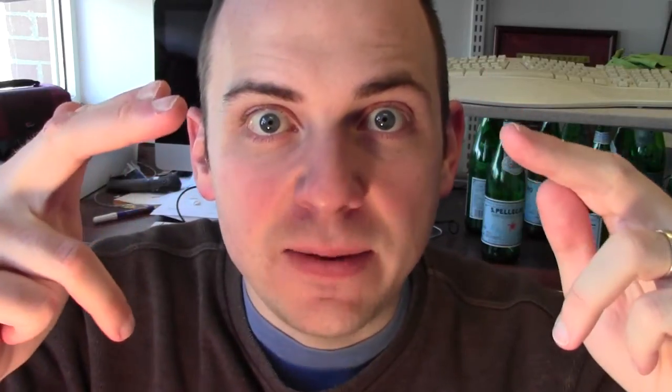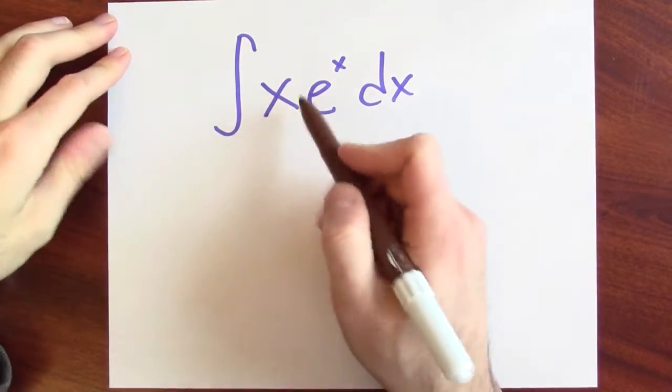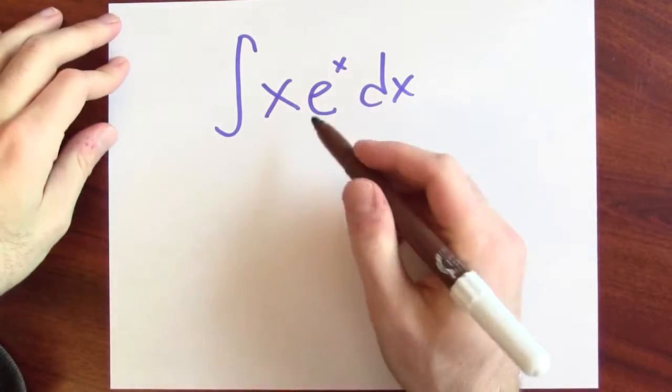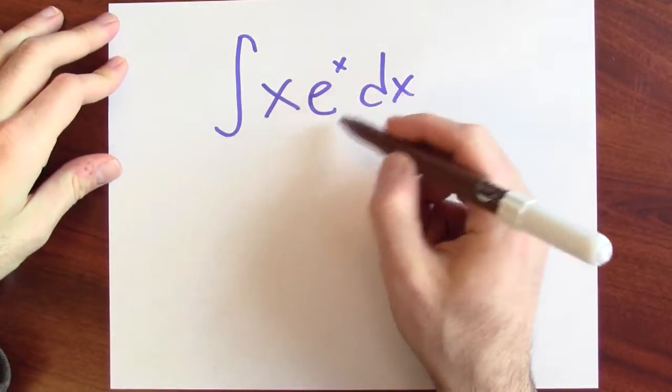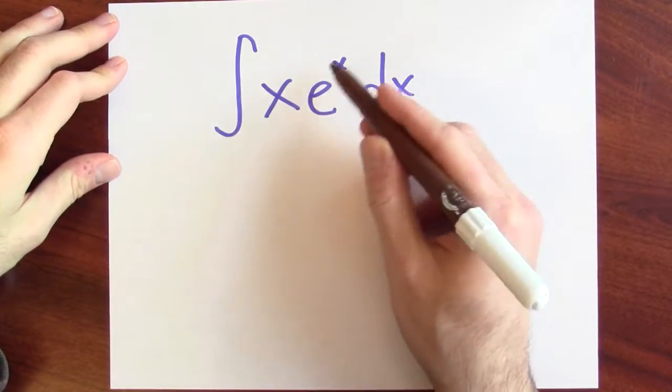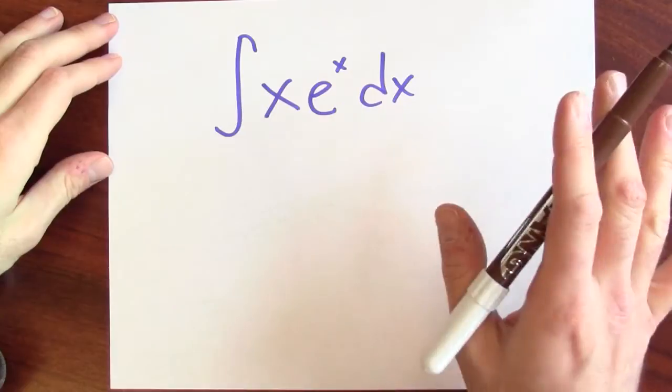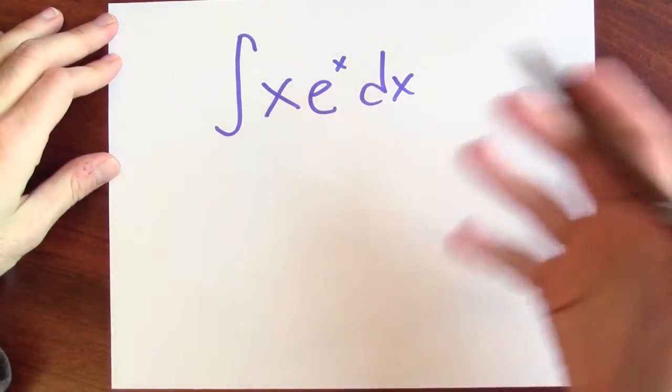If we're going to attack this integral by parts, then I've got to pick a u and a dv. I'd be willing to differentiate x. That'll make x just go away. And the price I'd have to pay is to anti-differentiate what remains, but anti-differentiating e to the x is not much of a price to pay because e to the x is its own anti-derivative.